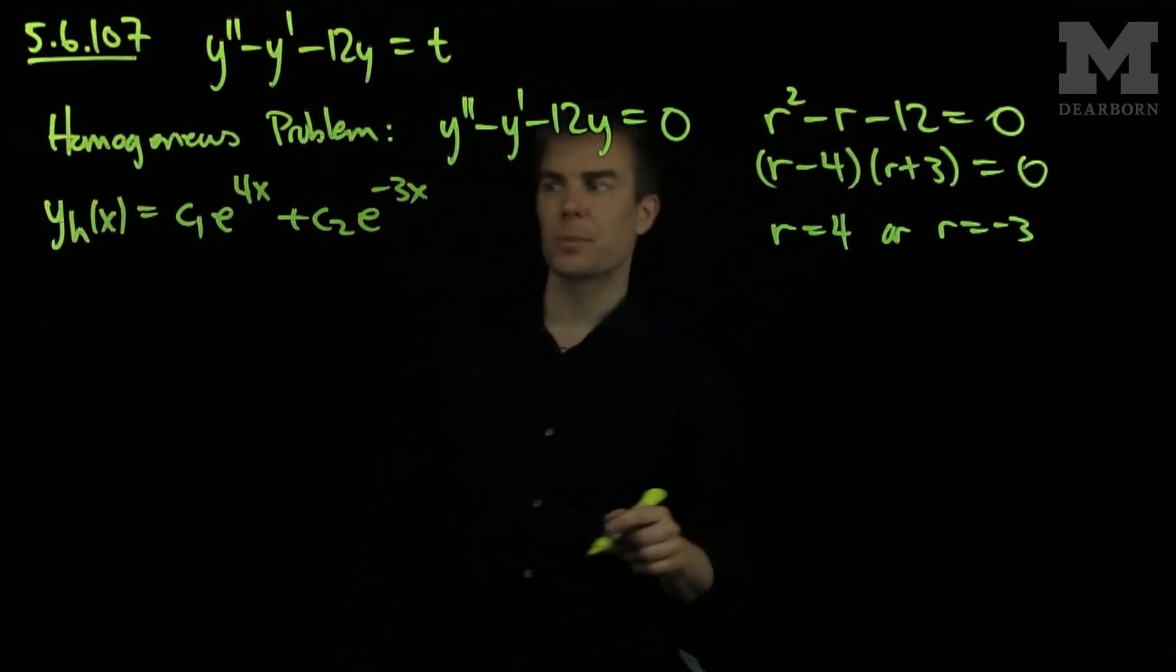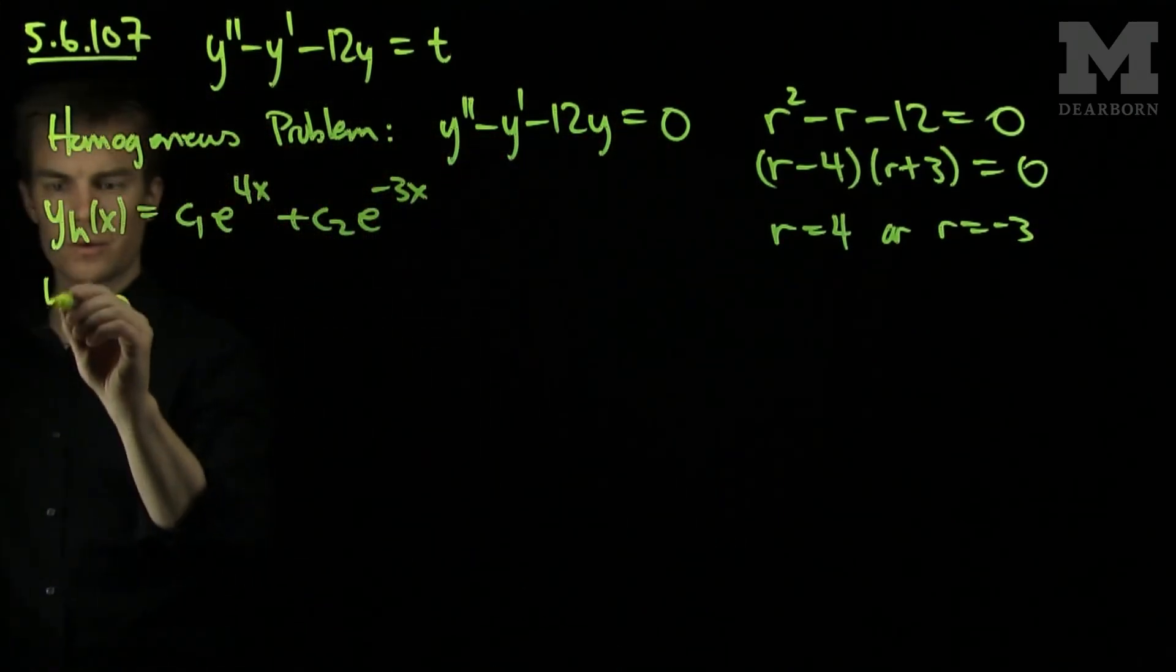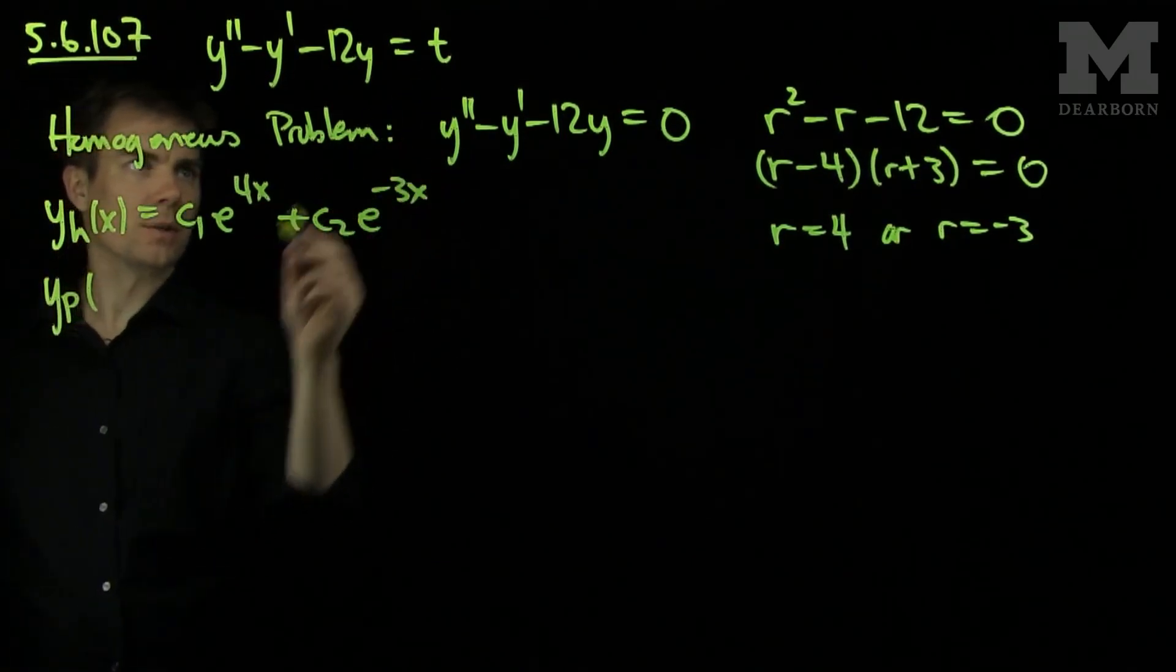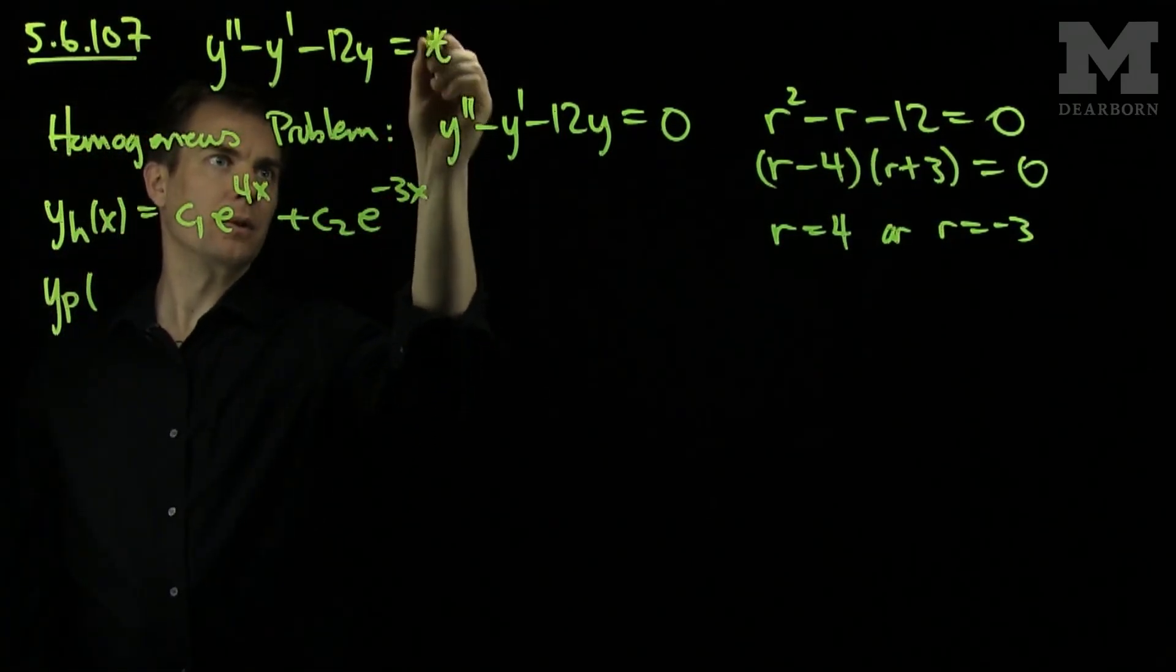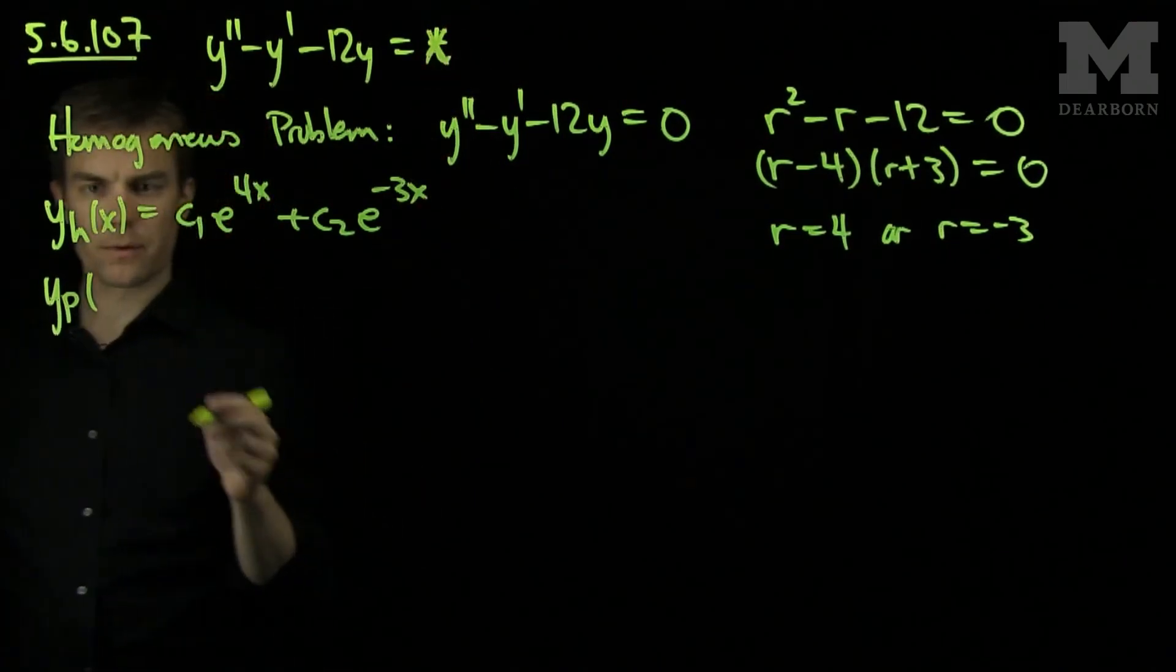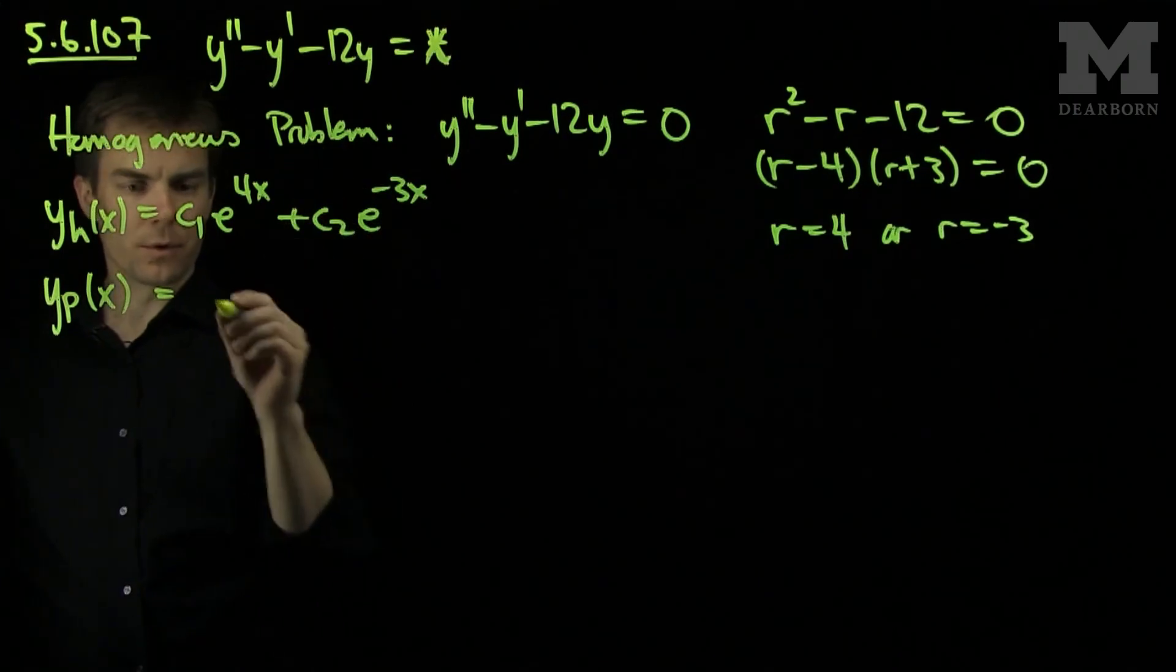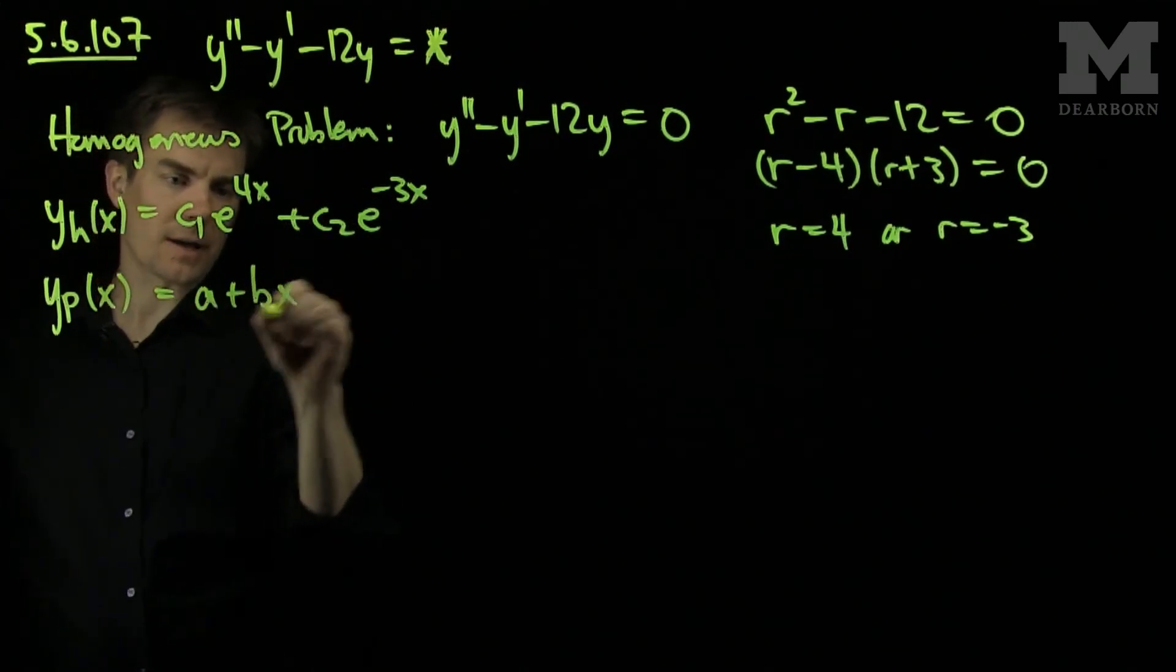And now we seek a particular solution. I've used x here. The problem has t's. We can change all the t's to x's without any noticeable difference. y particular of x will be equal to a plus bx.